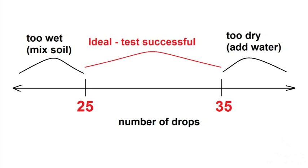If your number of drops was more than 35, your sample is too dry. You will need to add water to your sample, mix the sample, and repeat the test. Repeat this process until you get between 25 and 35 drops.